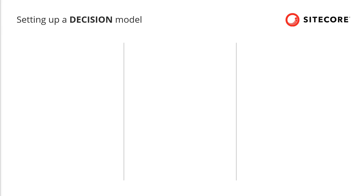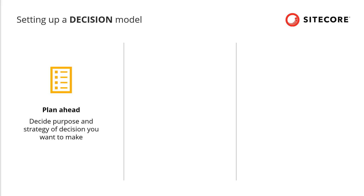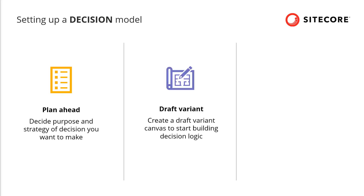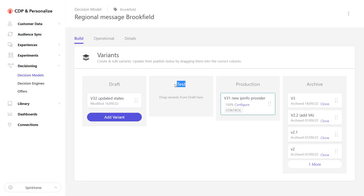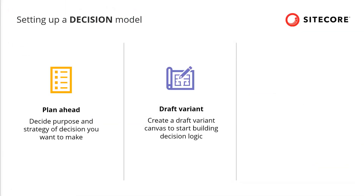Let's look at some high-level steps when designing a decisioning model. Firstly, we should plan ahead — we need to know why we are building it, for example to increase sales of certain services or products, and include an A/B testing plan for our decision models. Then we move the decision model canvas to the draft variant. We have different stages before going live: we start with draft, then test, then we can move to production. In the draft phase it doesn't impact any live ongoing websites or published content.